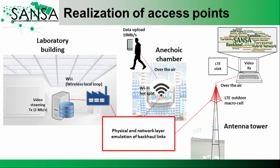To emulate various network access patterns, three backhaul nodes were integrated with access points. One access point was an LTE base station situated outdoors. The second was a Wi-Fi hotspot situated in an anechoic chamber to avoid interference with Wi-Fi within the testing facilities. The third access point was a direct internet connection representing a wireless local loop. These backhaul nodes represent the only access points used for generating traffic within the network.